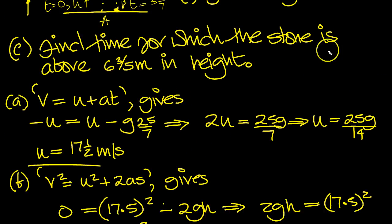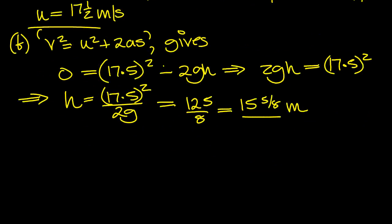Find the time, total time for which the stone is above this height. So let's look at that then. We'll use the formula s is equal to, because this is the height in terms of the time, ut plus a half at squared. So use this formula then.